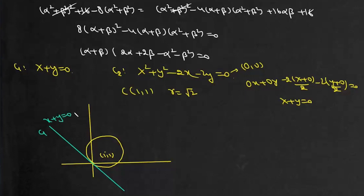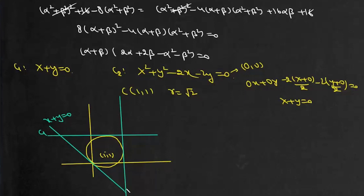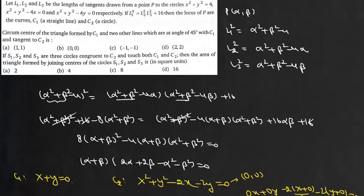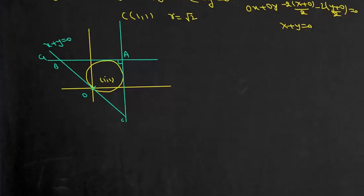The line C1 is x + y = 0. The lines making 45° with C1 are parallel to the x-axis and y-axis respectively. These two lines, together with C1, form triangle ABC. Since angle A is 90°, the circumcenter is the midpoint of BC, which is the origin. So the circumcenter is the origin — option B.